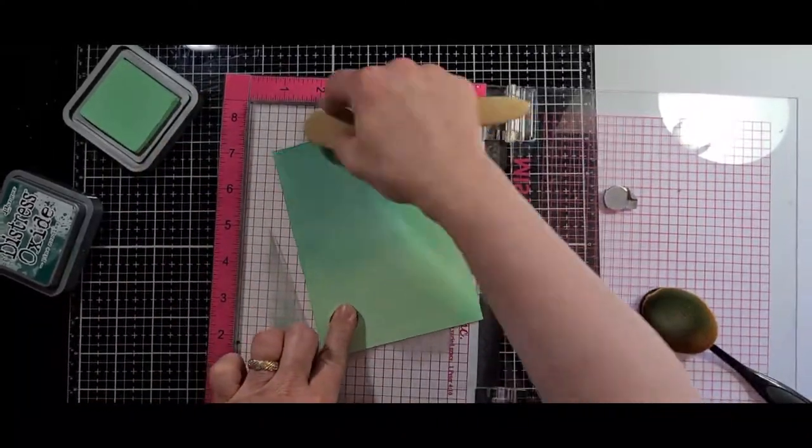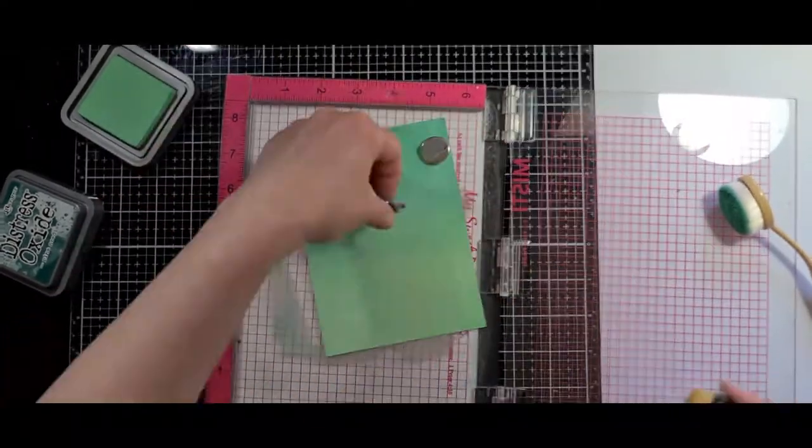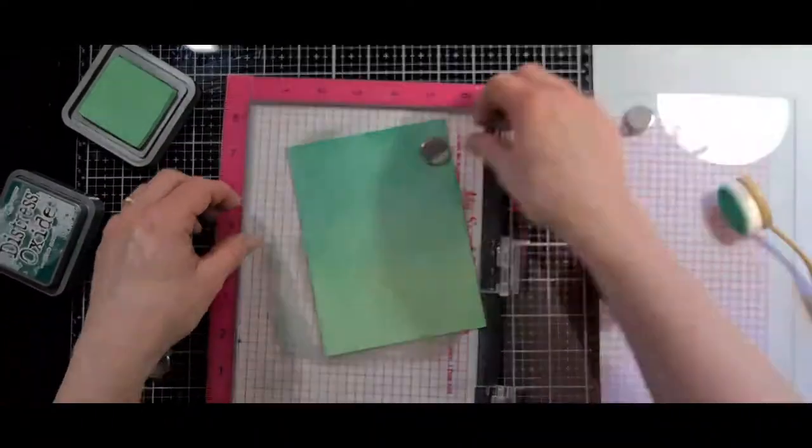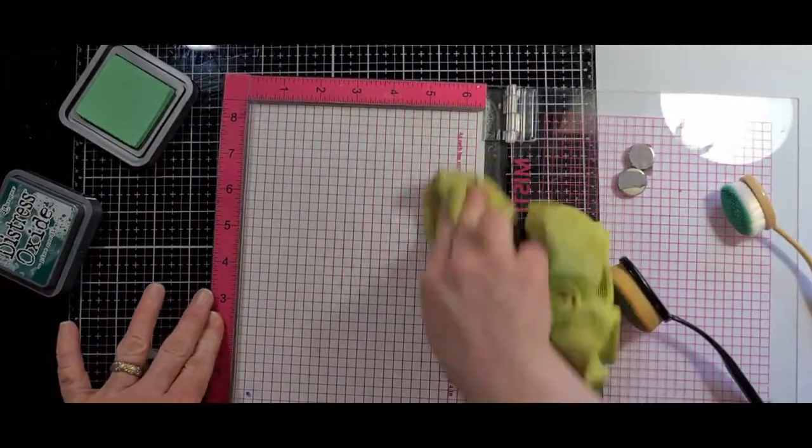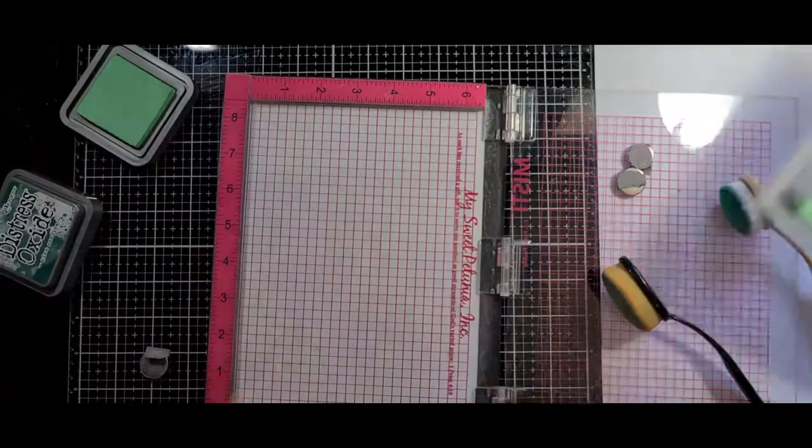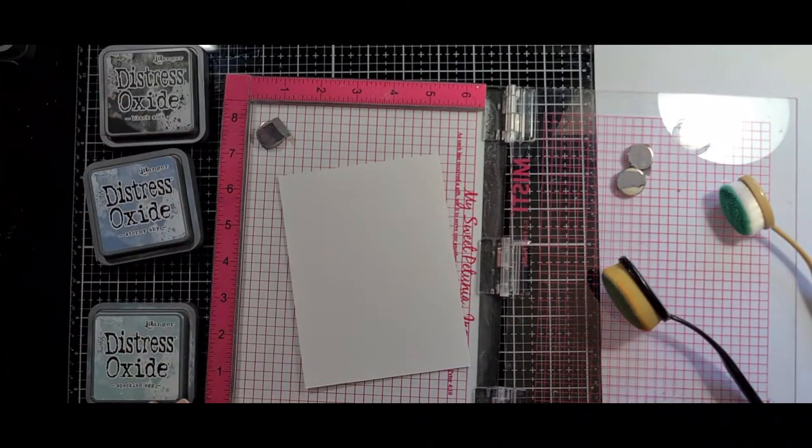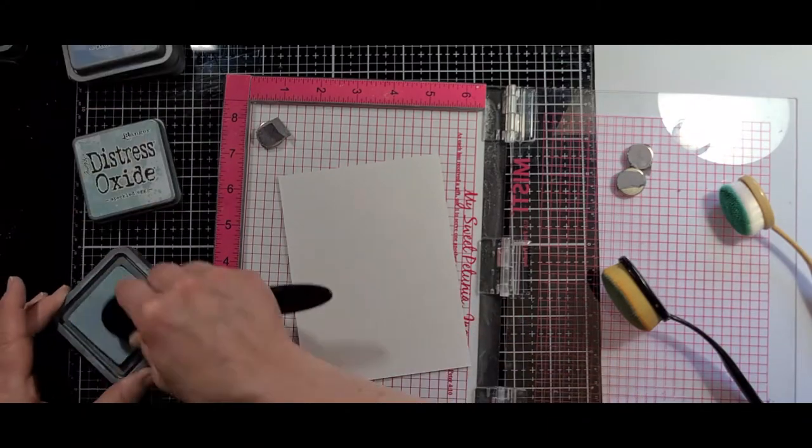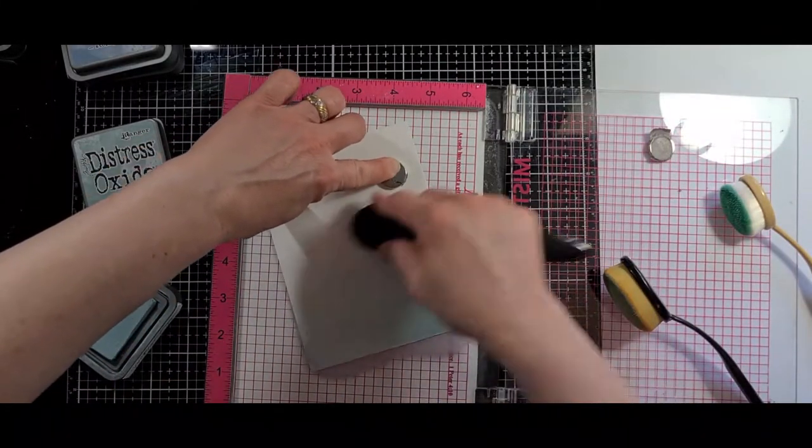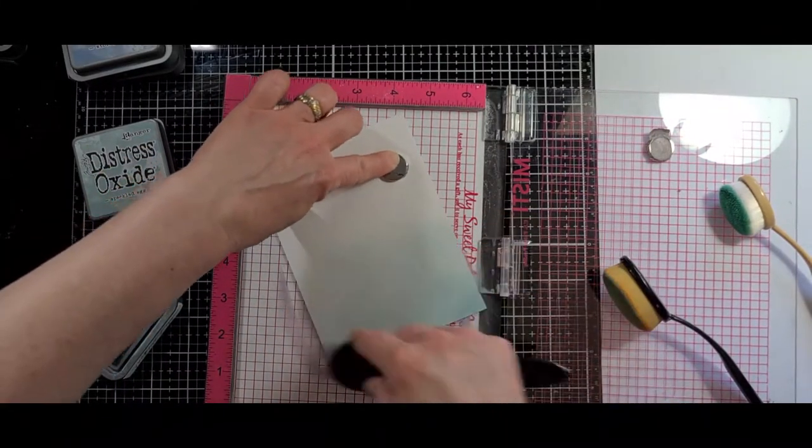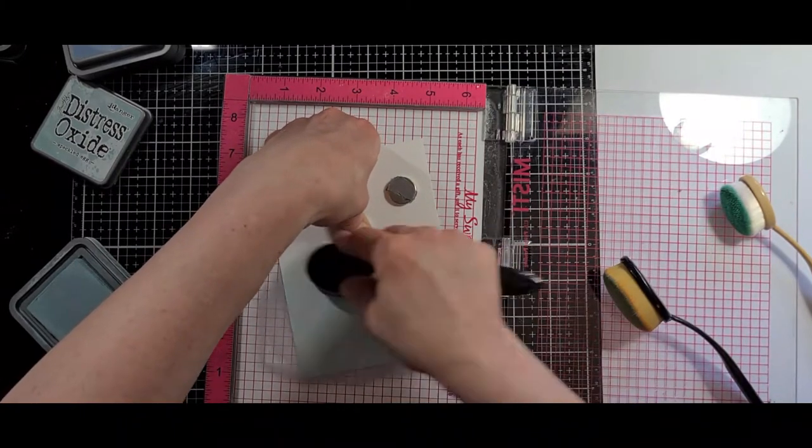So for my ink blending, I decided to try my MISTI because the MISTI is magnetic. So I removed the foam insert and the paper from it and I put my card bases in there and tried to do some ink blending with that instead of getting my fingers all inky and leaving marks on the ink blending. And as well, post-its does work, it does help to protect your fingers, but I find that the paper does move around quite a bit with the post-its. So I decided to try it with the MISTI and the magnets. It actually did work quite well.